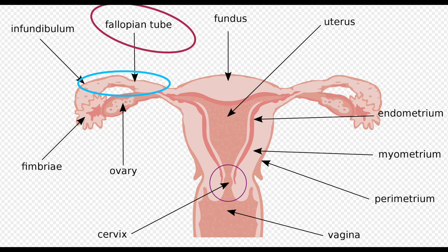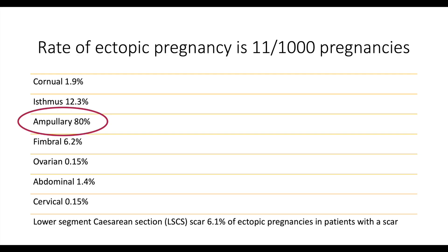The fallopian tube has four parts, which include isthmic, ampullary, fimbrial, and cornual, out of which the ampullary is the most common site for an ectopic pregnancy.